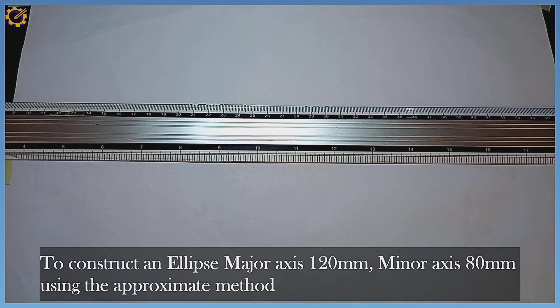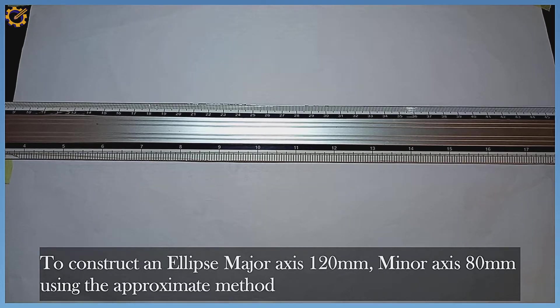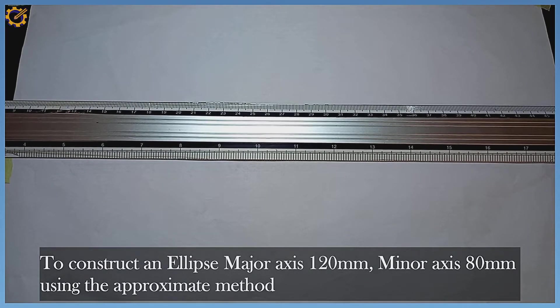We'll take our major axis to the length of 120 millimeters and our minor axis to be the length of 80 millimeters.